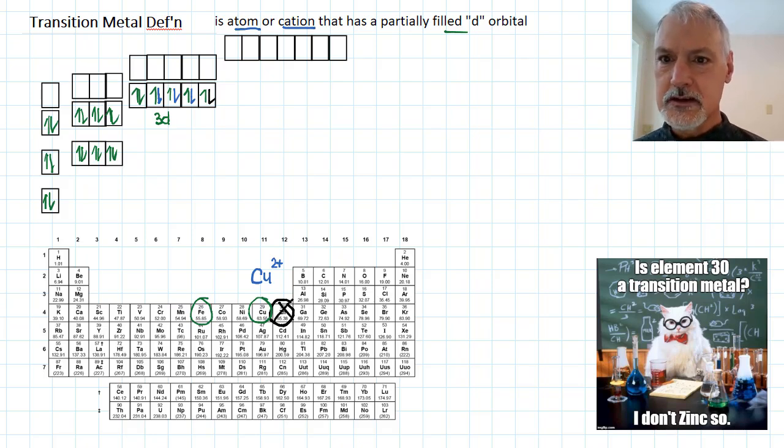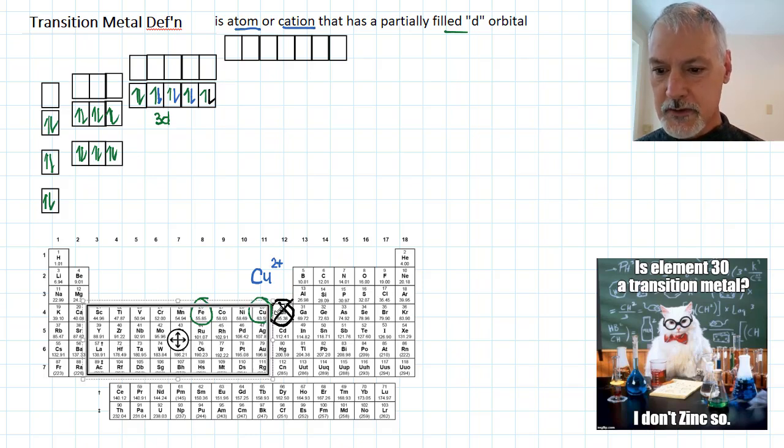So if we take a look at the periodic table, our transition metals are in this region here, pretty much the d-block with the exception of the last column.